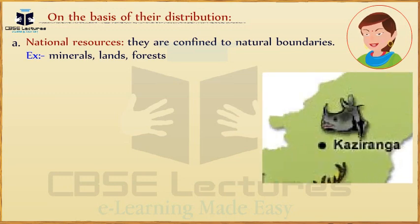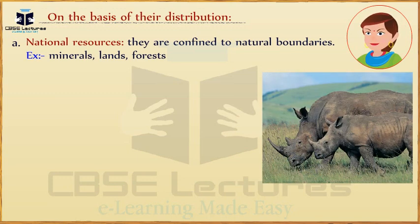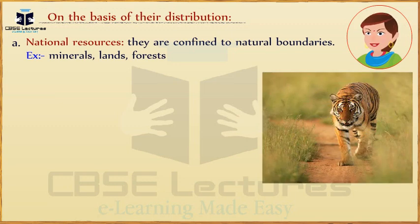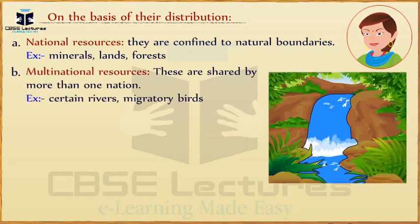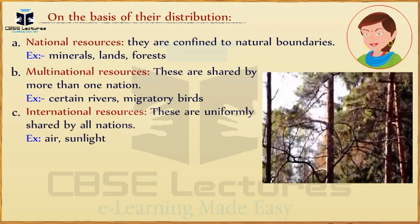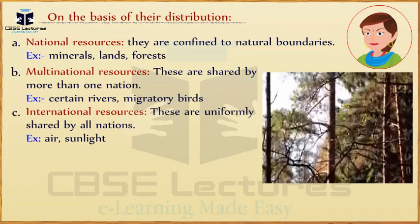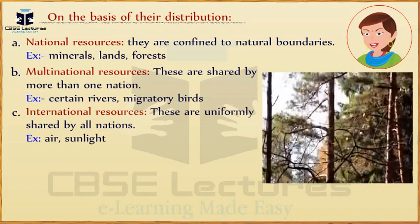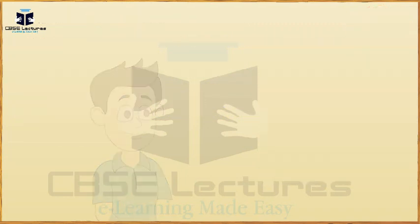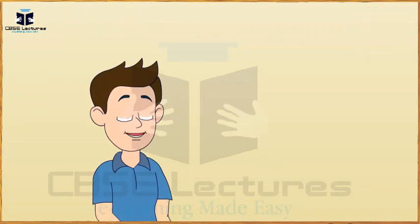On the basis of their distribution: First, national resources — these are confined to a nation's boundary. Examples: minerals, land, forests. Second, multinational resources — these are shared by more than one nation. Examples: certain rivers, migratory birds. Third, international resources — these are uniformly shared by all nations. Examples: air, sunlight.